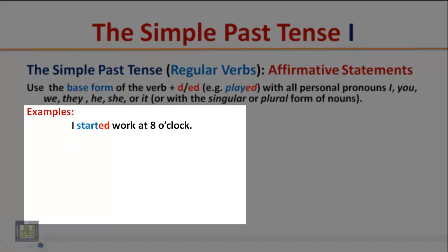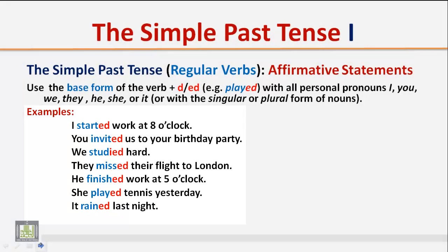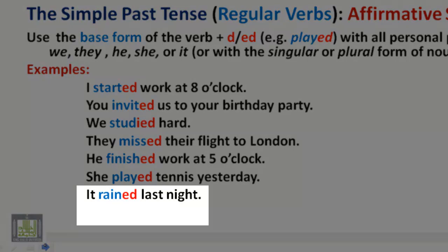Examples: I started work at 8 o'clock. You invited us to your birthday party. We studied hard. They missed their flight to London. He finished work at 5 o'clock. She played tennis yesterday. It rained last night. Notice that we form the Simple Past Tense by adding ED to the base form.